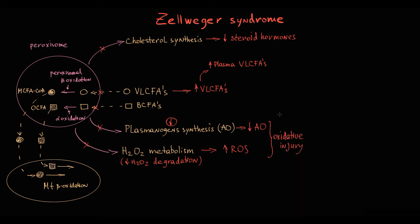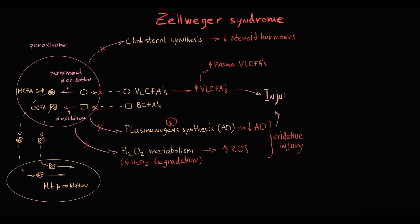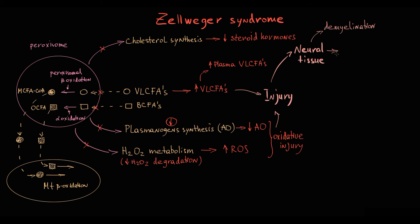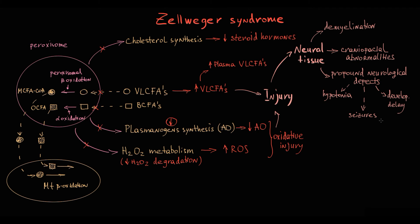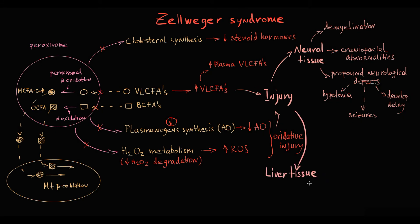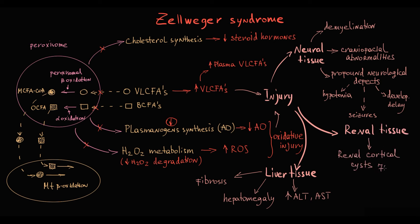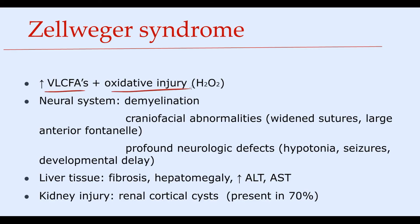Abnormal accumulation of very long-chain fatty acids together with oxidative injury causes severe damage to neural tissue. Damage to neural membranes causes demyelination, disrupts normal neural development, and results in craniofacial abnormalities such as widened sutures and a large anterior fontanelle. This also causes profound neurological defects including hypotonia, seizures, and developmental delay. In liver tissue — which has the highest peroxisomal quantity — progressive oxidative injury causes fibrosis with hepatomegaly and elevated transaminases. Renal damage manifests as renal cortical cysts, present in 70% of affected individuals.